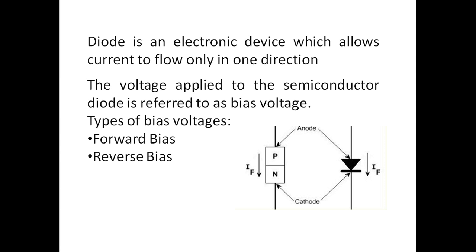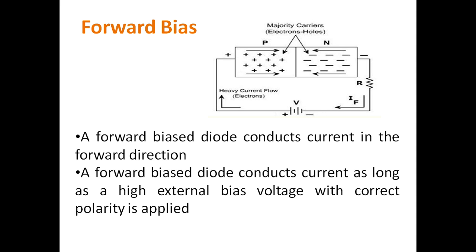The diode symbol is shown here, where the suffix F represents the forward current. During forward bias, the anode is connected to the positive terminal of the battery and the cathode is connected to the negative terminal. The diode then conducts a forward current in the forward direction. This forward current is mainly due to the majority carriers in the P-layer, which are holes.